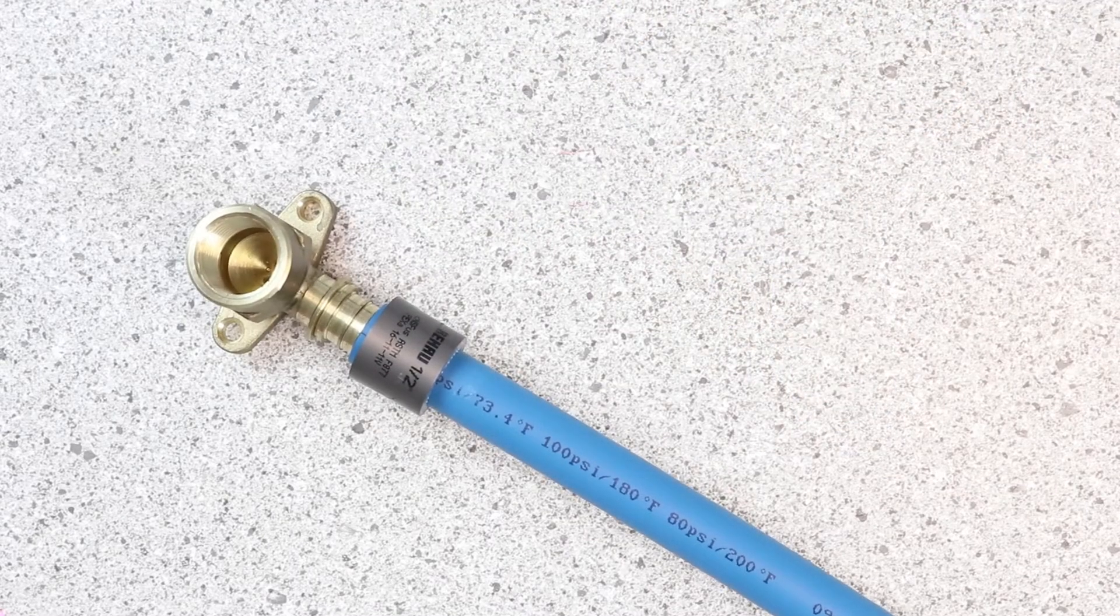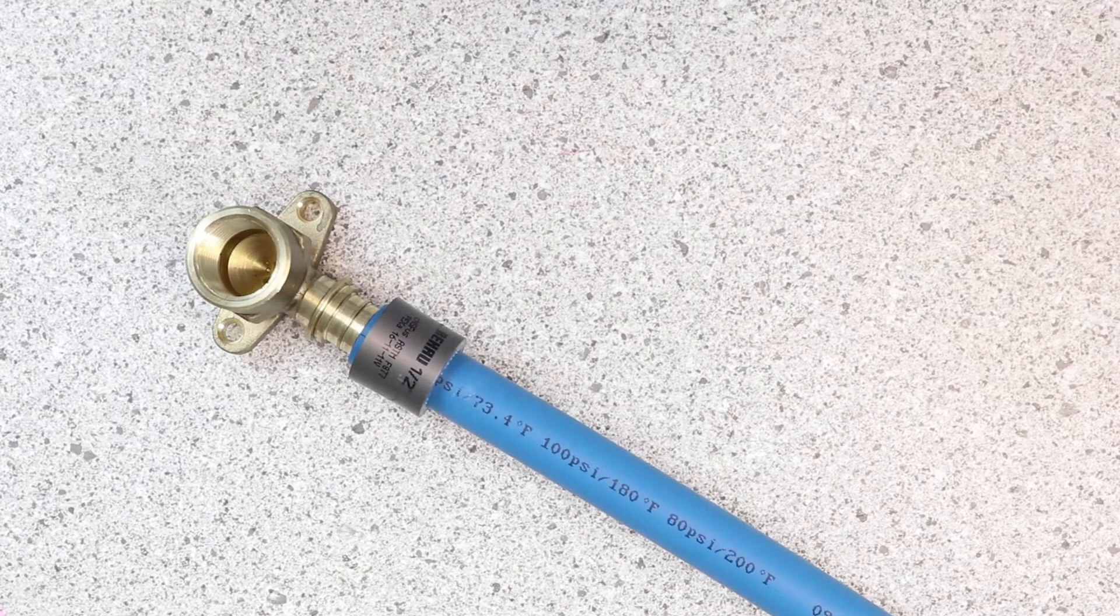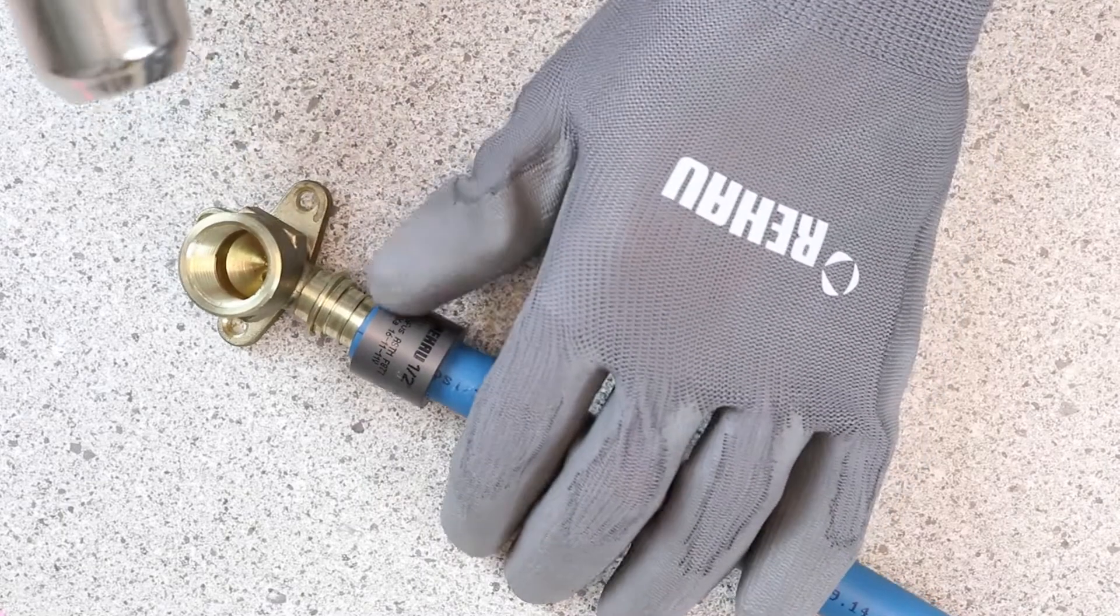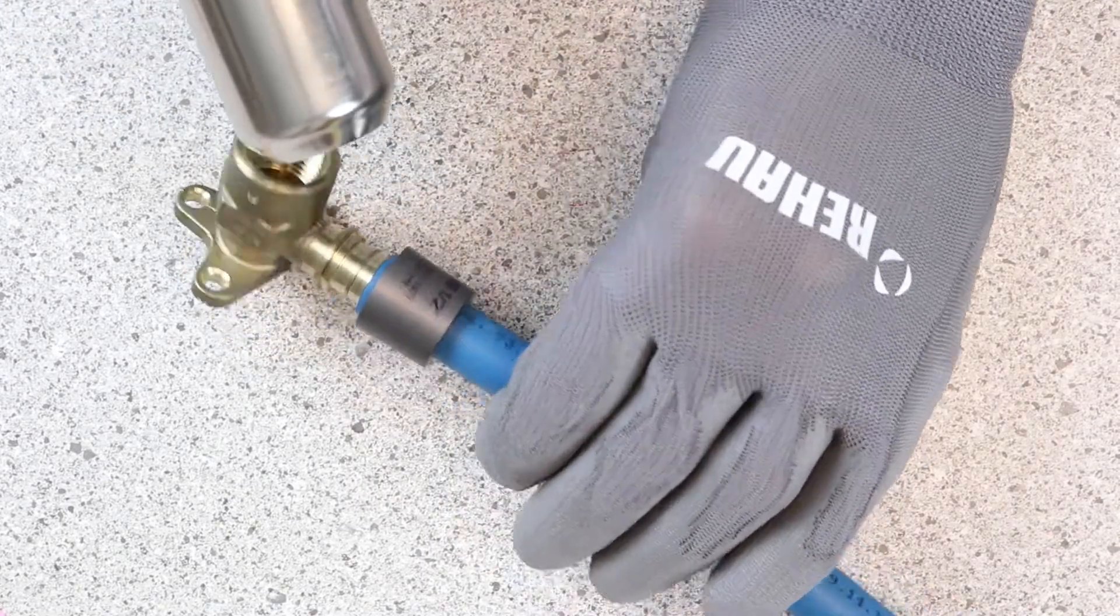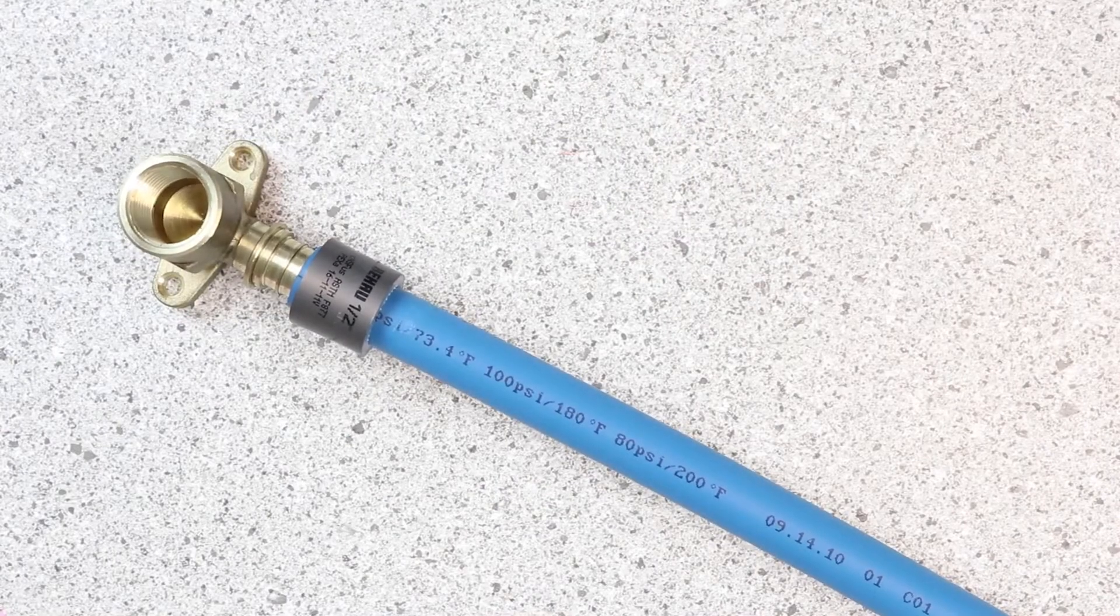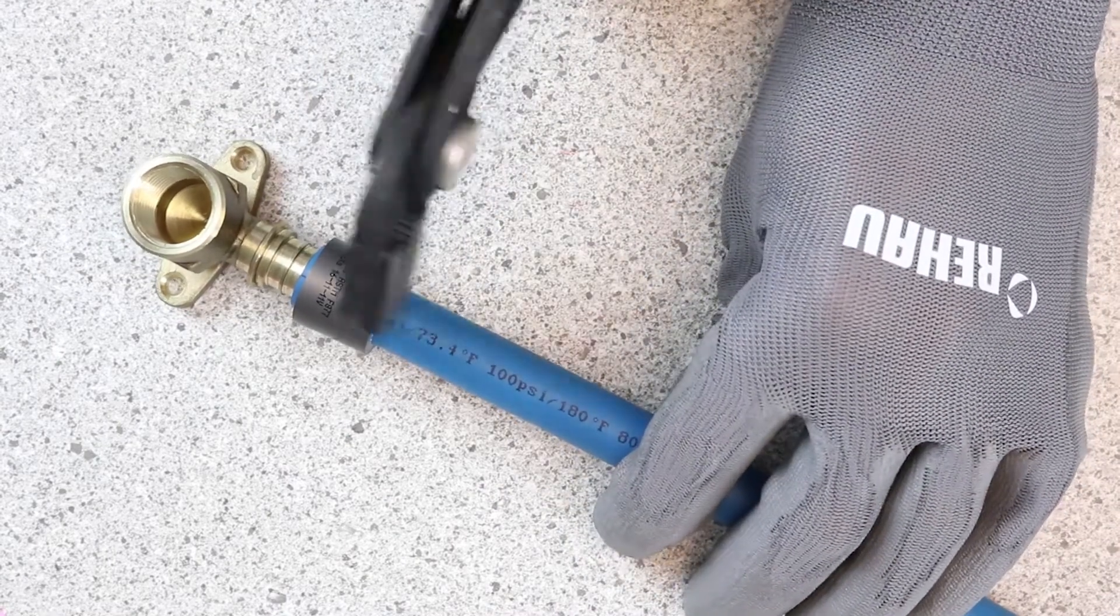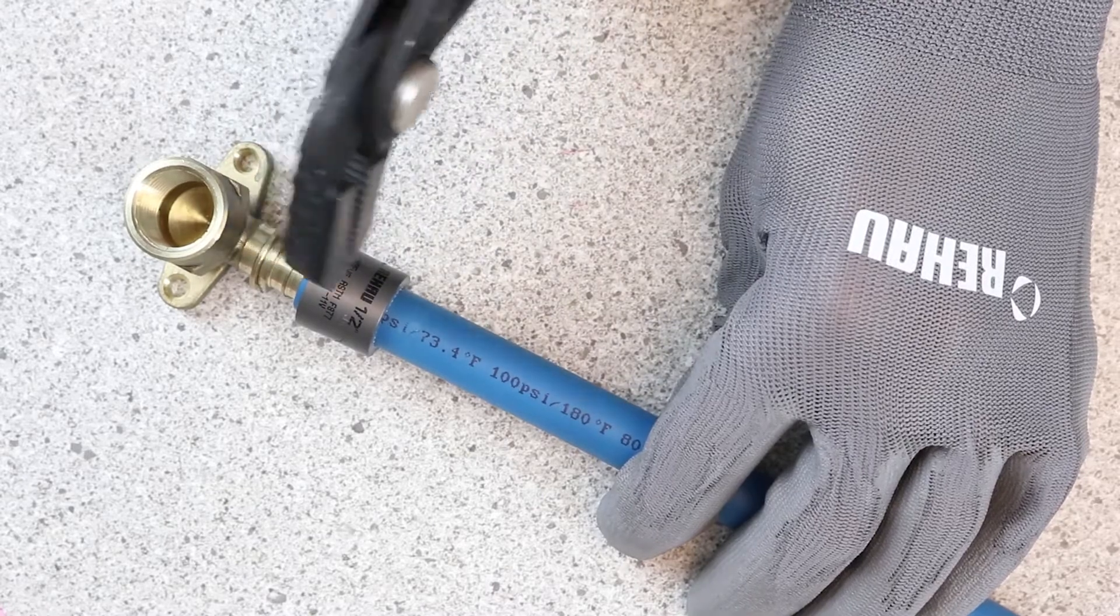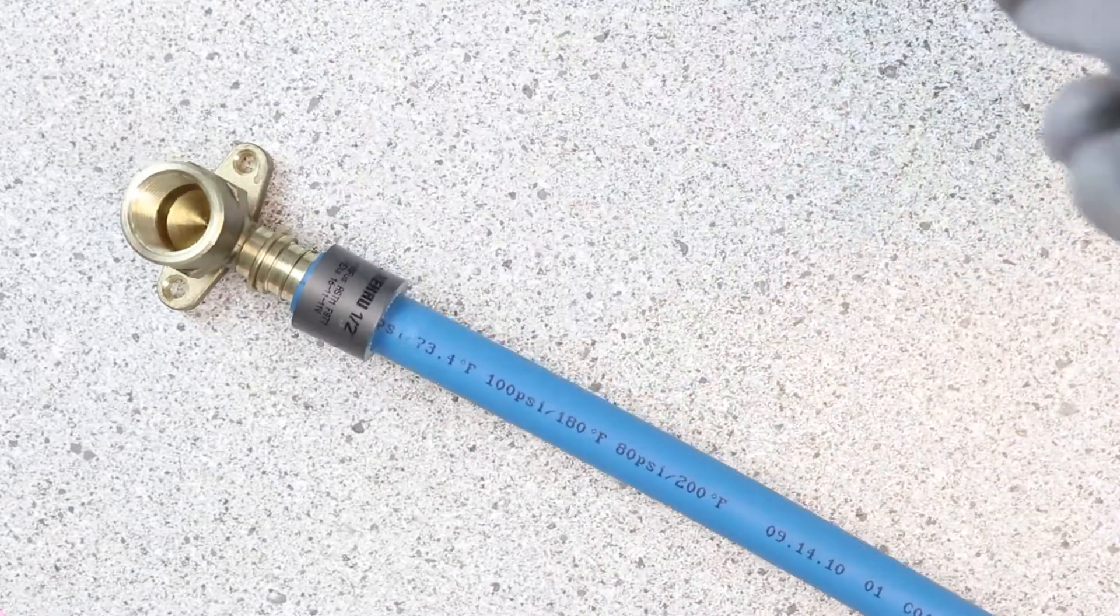With the brass fitting, what you can do is heat up the sleeve and the pipe with a heat gun, and then you can take a pair of pliers and carefully pull off the sleeve and the piece of PEX pipe without damaging any of the sealing edges of the fitting.